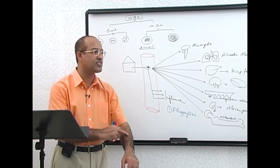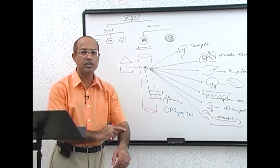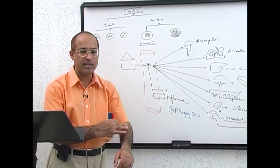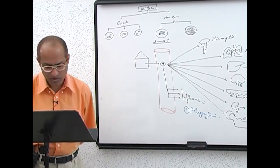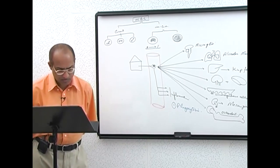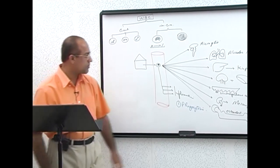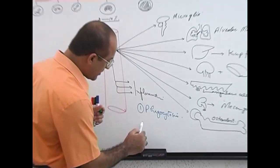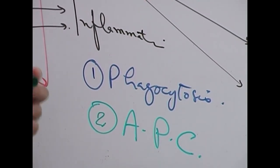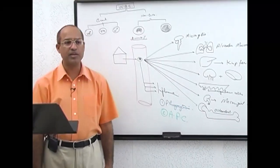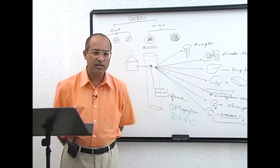For example, if there is some injury and many cells die, macrophages come into the tissue and remove the dead cells so that the injured tissue gets rid of them and local cells can proliferate and replace the lost tissue. So one of the main functions of macrophages is that they are very powerful phagocytic cells.